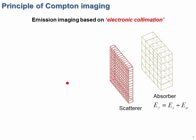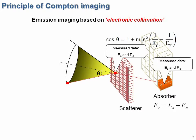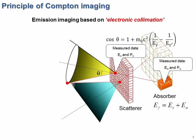Compton Imaging Devices are generally composed of multiple position-sensitive gamma ray detectors. When a gamma ray undergoes Compton scattering and is then completely absorbed, from the position and energy information we can derive a conical surface which contains the source location on its surface.